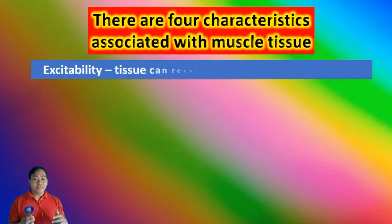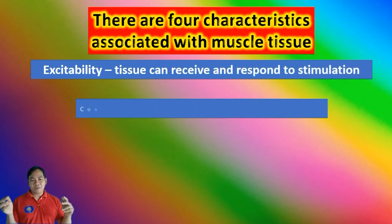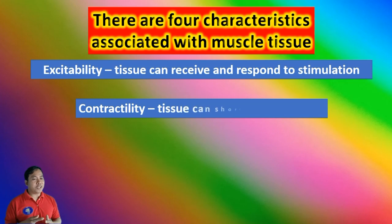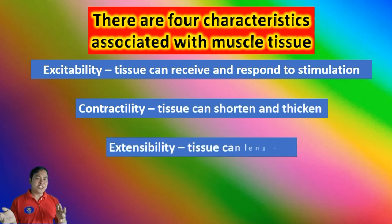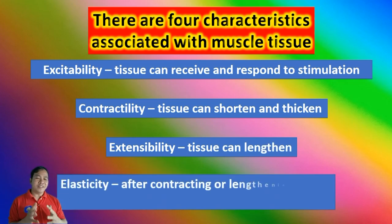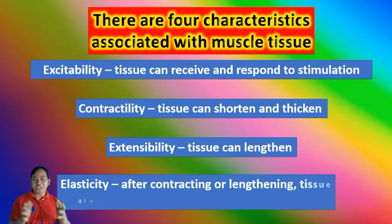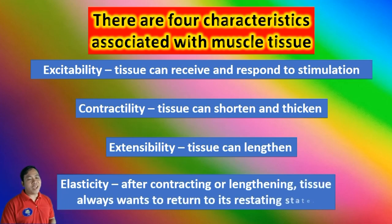There are four characteristics associated with muscle tissue: excitability — tissue can receive and respond to stimulation; contractility — tissue contracts and thickens; extensibility — tissue can lengthen; and elasticity — after contracting or lengthening, tissue always wants to return to its resting state.